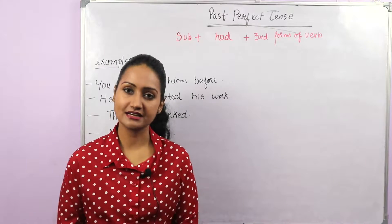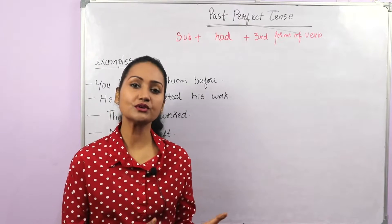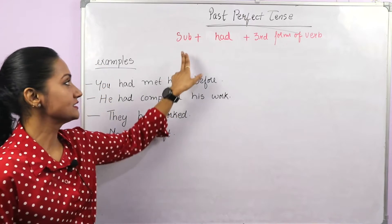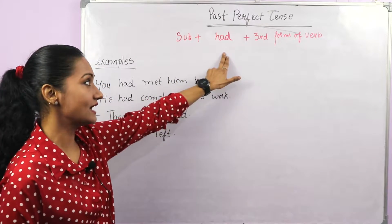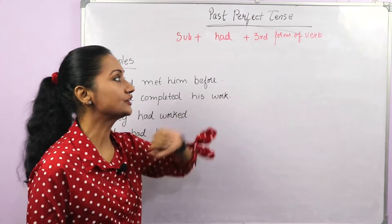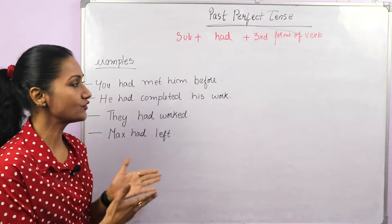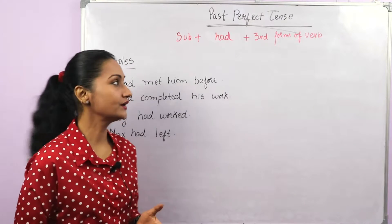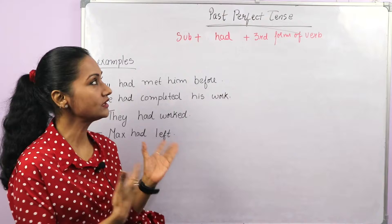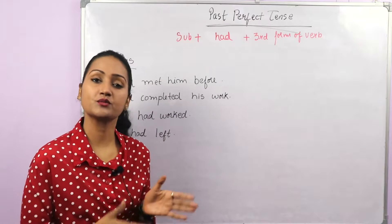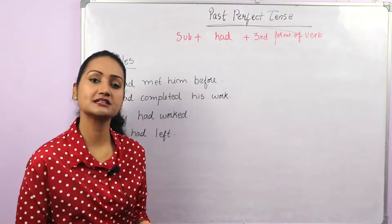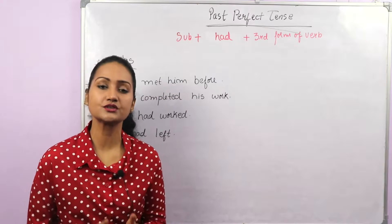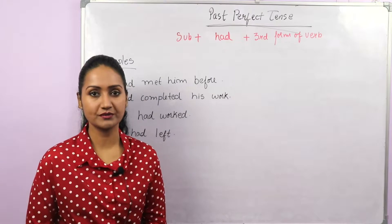Let's understand it through some examples. But before that, let's look at the structure: subject, then 'had', then the third form of the verb. The third form is also called the past participle form. In all three perfect tenses — present perfect, past perfect, and future perfect — we always use the third form of the verb.